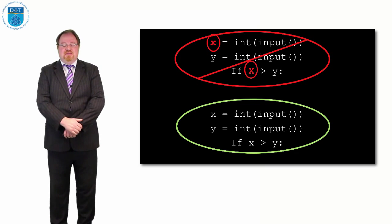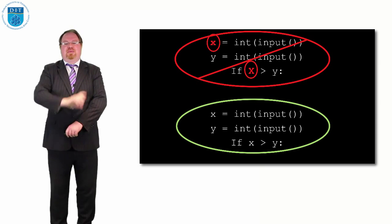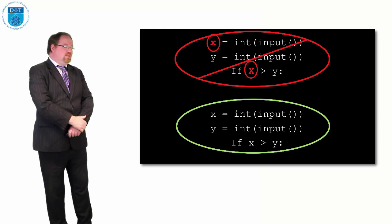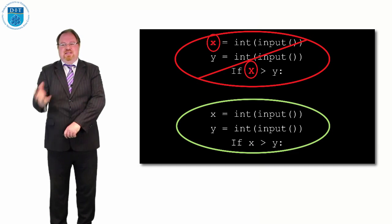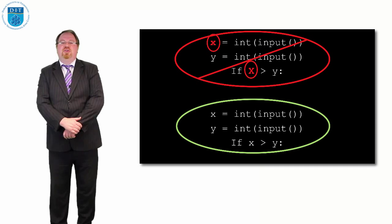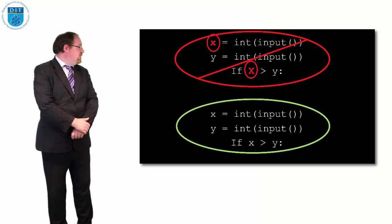If we call a variable isPrime with a capital I and a capital P, then it must be capital I, capital P everywhere. Because Python is what's called case sensitive. It thinks capital X is a different variable from small x. So you need to make sure all your capitalization is correct.